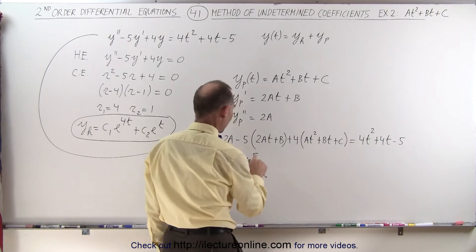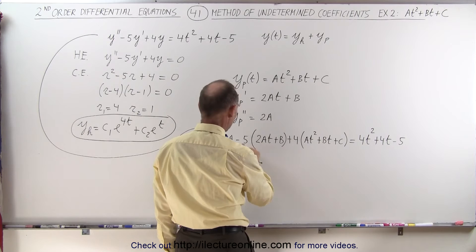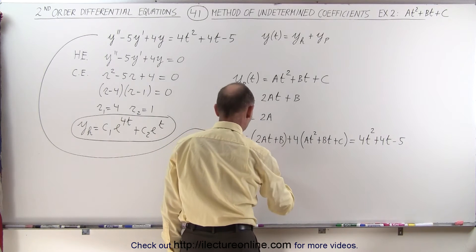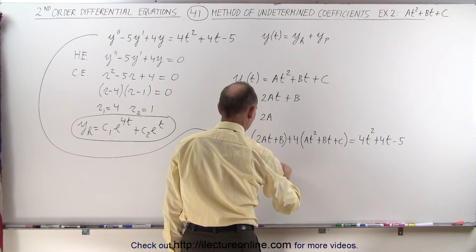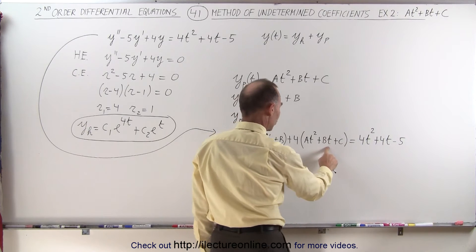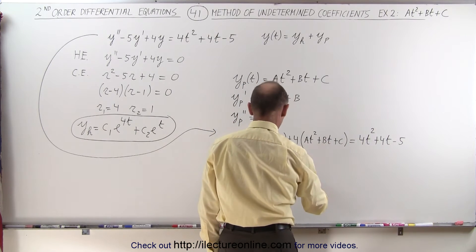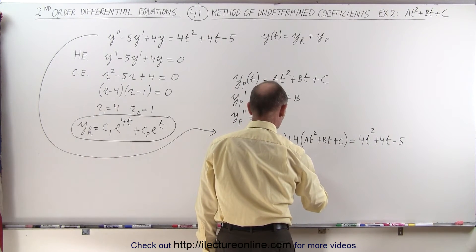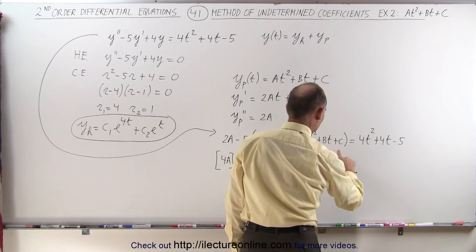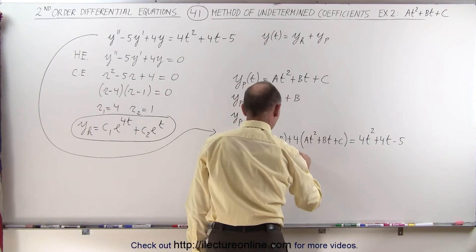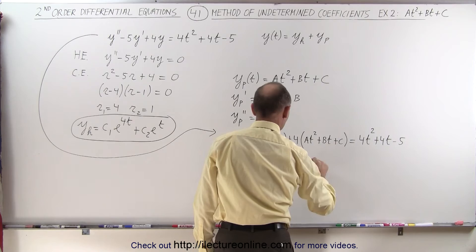Plus, what else do we have? Well, we have a t term right here. It's minus 10a times t, so minus 10a. We have another t term right here that's 4 times this. That would be plus 4b. And that's it. That's the only t terms that we have. And so that's times t.